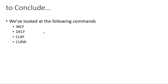To conclude this video, a quick recap of the commands covered. Increment file will increment a file and can either save the incremented value back into the file or into the working register. Decrement file will decrement a file by one and save the decremented answer into either the file or the working register. Clear file clears a file by writing zero into the file location, and clear W writes zero into the working register.